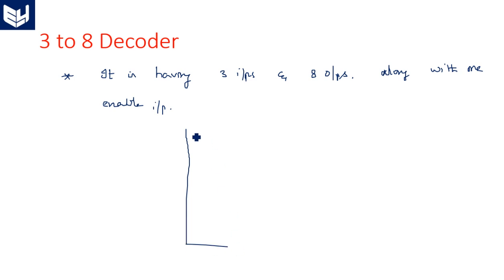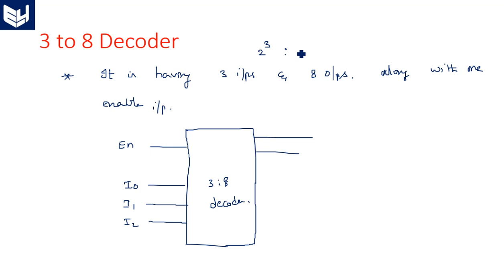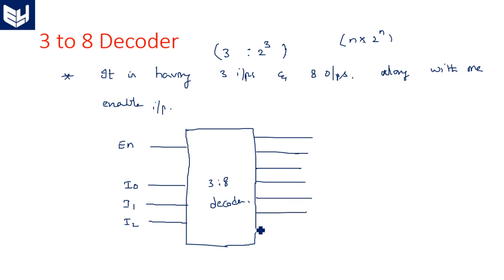Looking at the logic diagram, this is a simple 3-to-8 decoder with one enable pin. The enable pin is used to activate or deactivate the complete decoder. There are outputs y0 through y7 because 2 to the power 3 gives 8 outputs. The general size of a decoder is n-to-2^n, so here n equals 3, giving a 3-to-8 decoder.